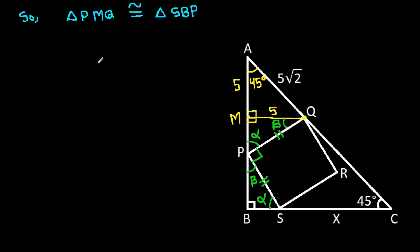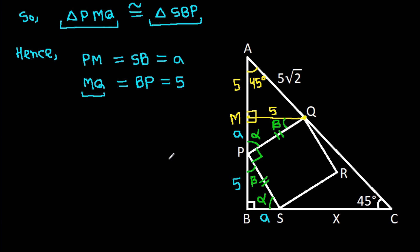And now these two triangles are congruent, hence PM will be equal to SB. Suppose if PM is a, then SB will be a, and MQ will be equal to BP. And MQ is 5, so BP will also be 5.